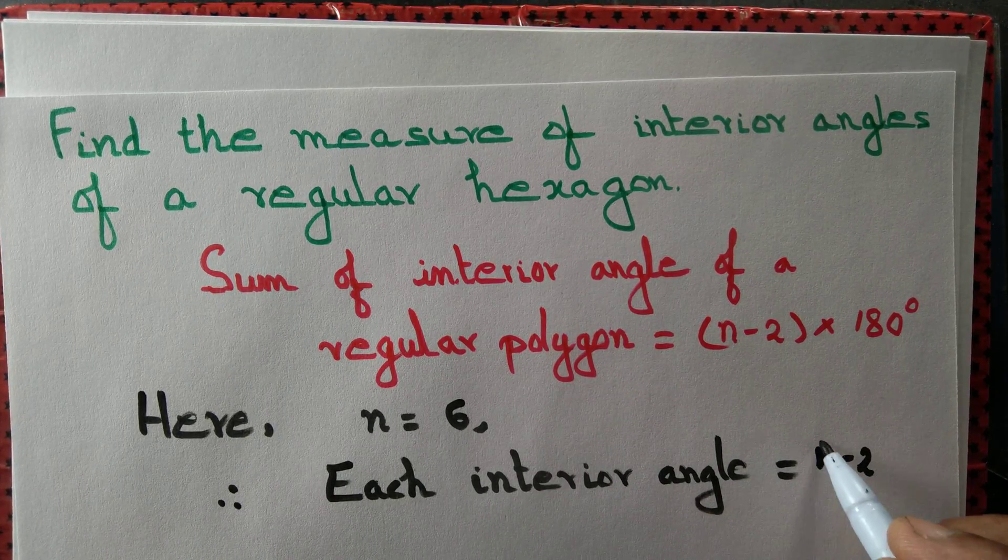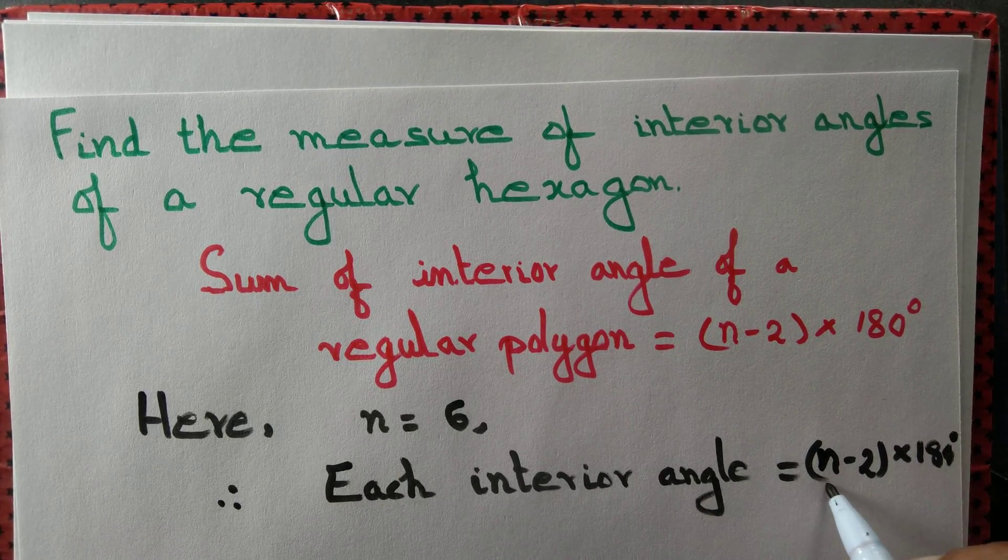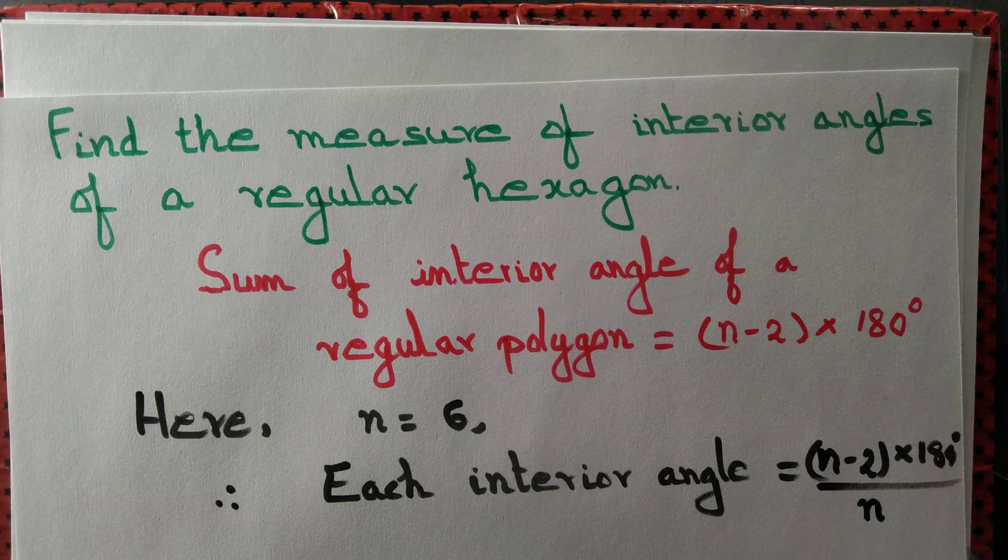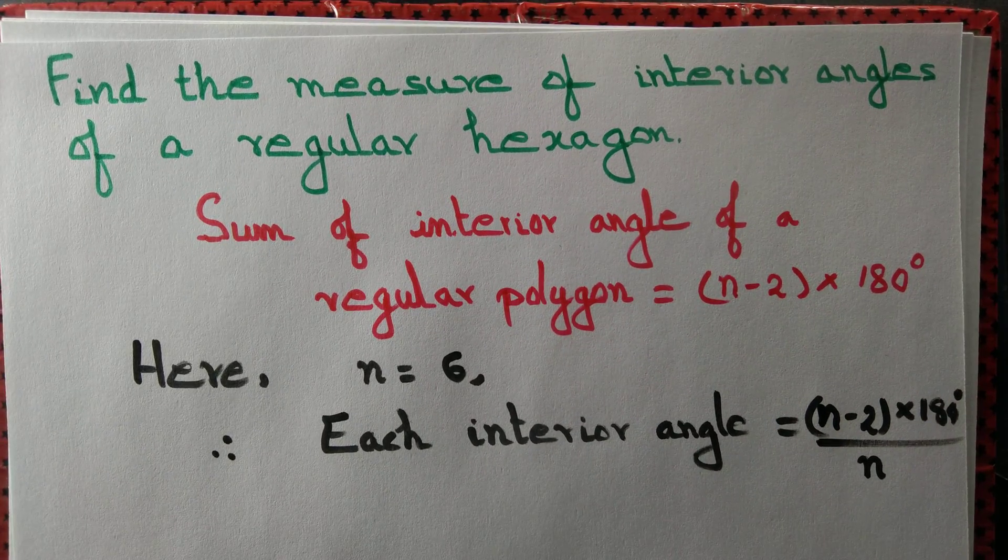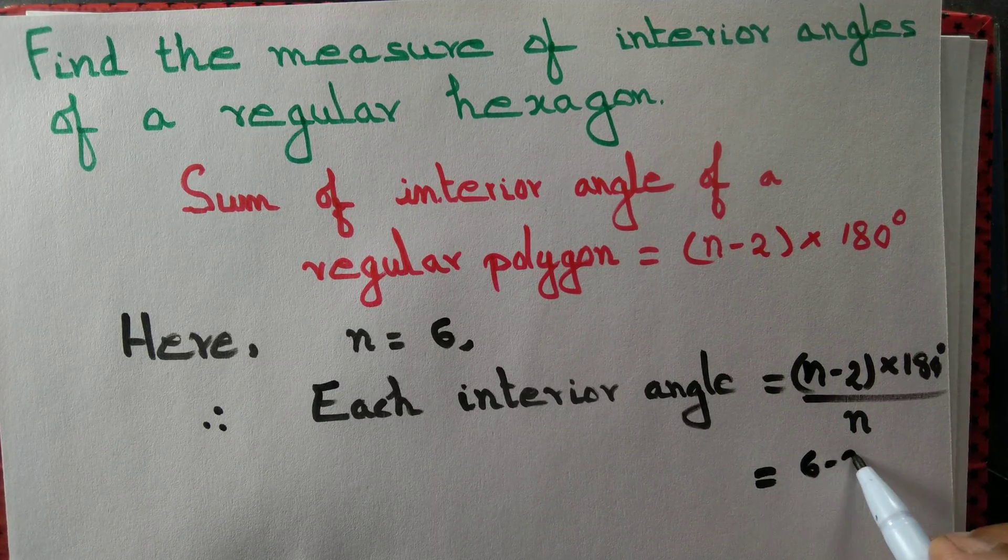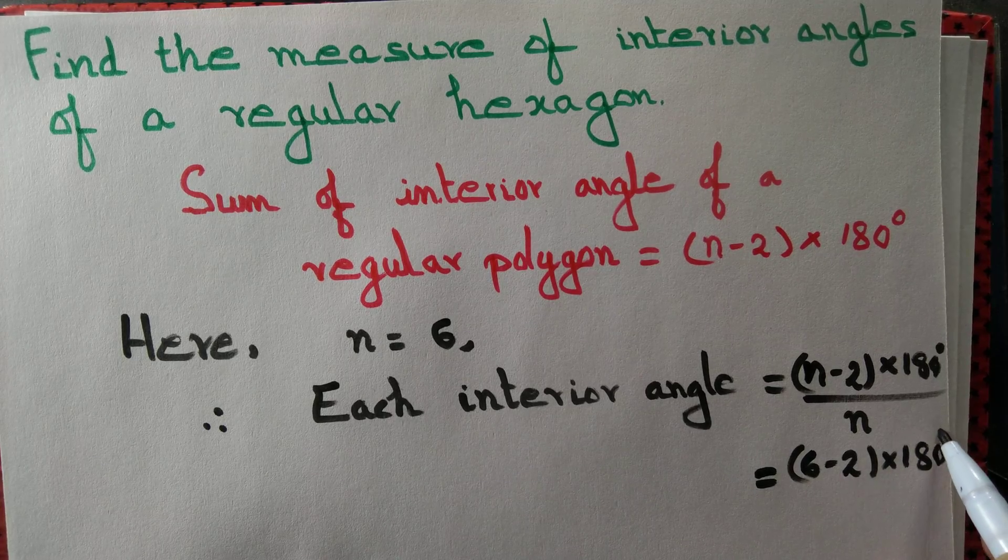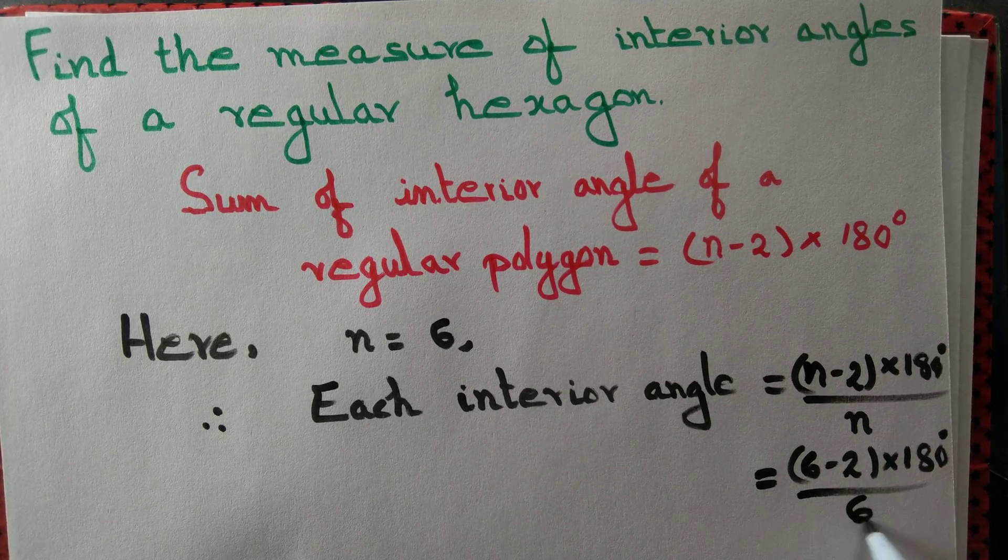The total sum is (n-2) × 180 degrees divided by n. Now we have n equals 6, so this equals (6-2) × 180 degrees divided by 6.